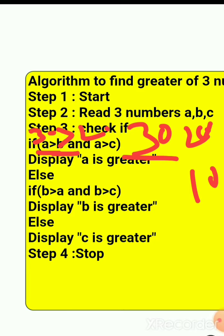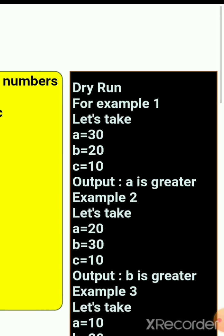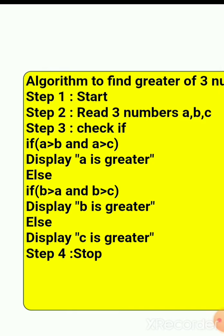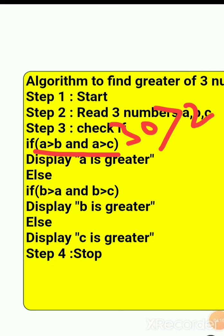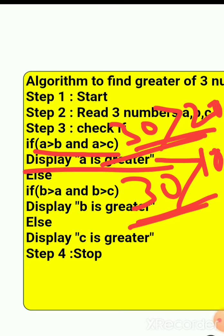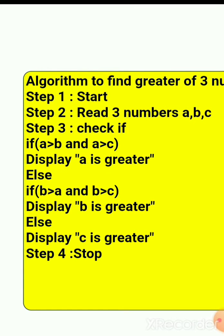a = 30, b = 20, c = 10. It checks: is 30 greater than 20? Yes. Is 30 greater than 10? Yes. Both conditions are true, so it displays 'a is greater' and stops the program.